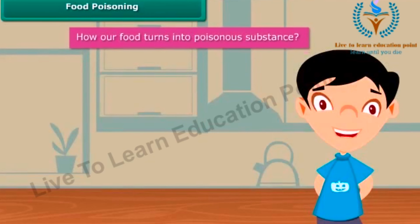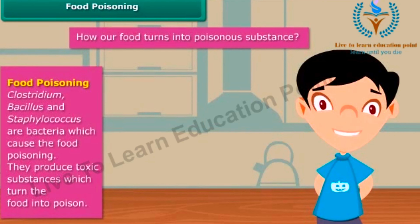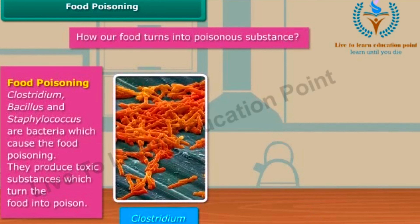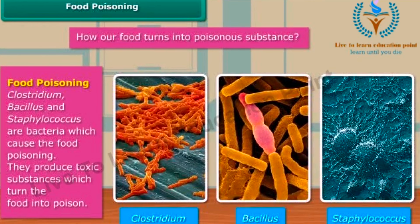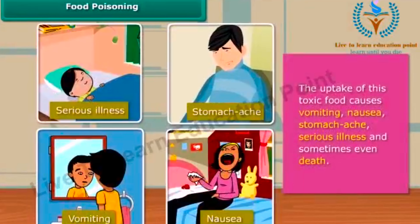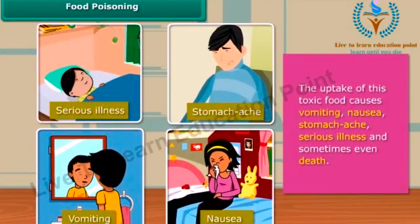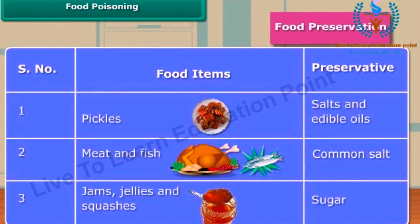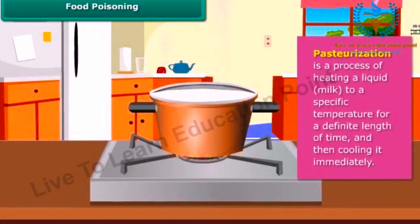Friends, in summer season, if food is left in the open for a longer duration, the food turns stale and finally becomes a poisonous substance. The cause of this is bacteria. There are some bacteria like Clostridium, Bacillus, and Staphylococcus which cause food poisoning. This food can cause harm to us. We can preserve our food by some methods, and we use the pasteurization process to preserve milk.